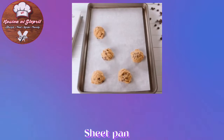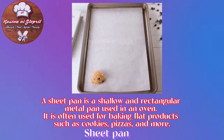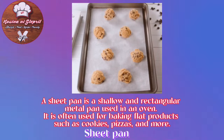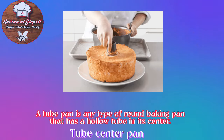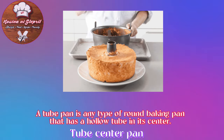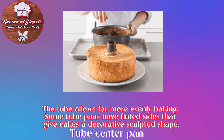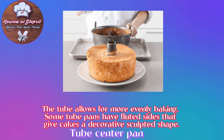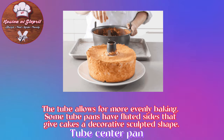Sheet Pan: A sheet pan is a shallow, rectangular pan used in an oven. It is often used for baking flat products such as cookies. Tube Pan: A tube pan is any type of round baking pan that has a hollow tube in its center. The tube allows for more even baking. Some tube pans have coated sides that give cakes a decorative sculpted shape.